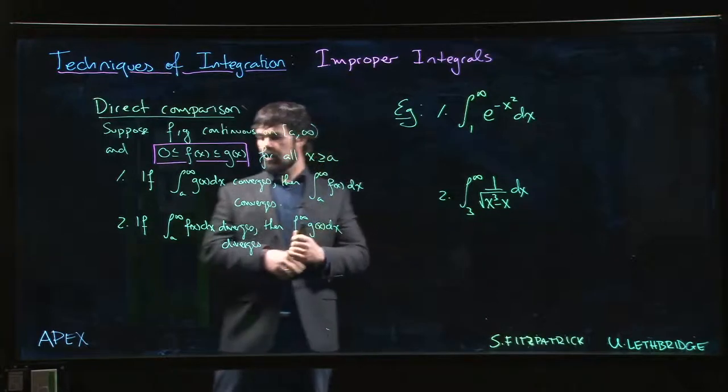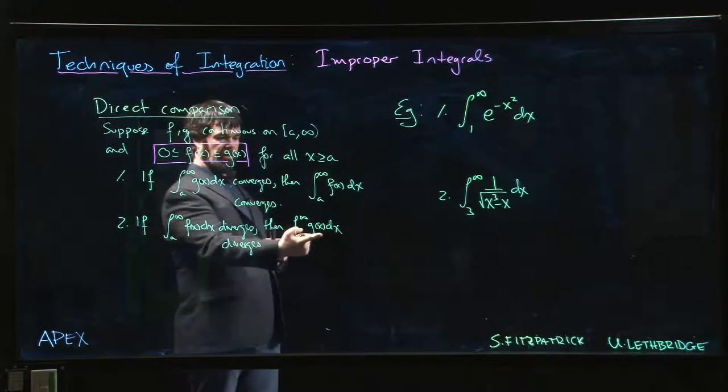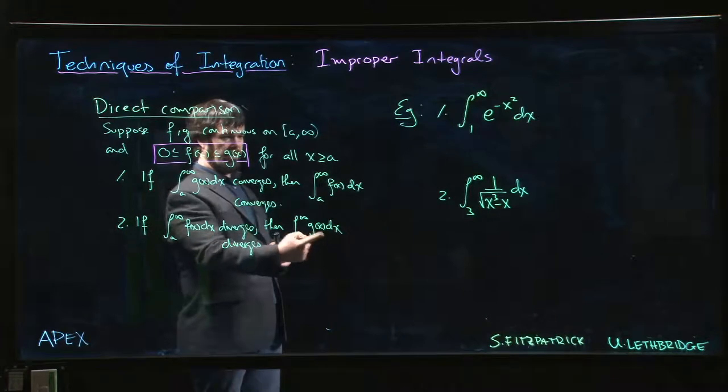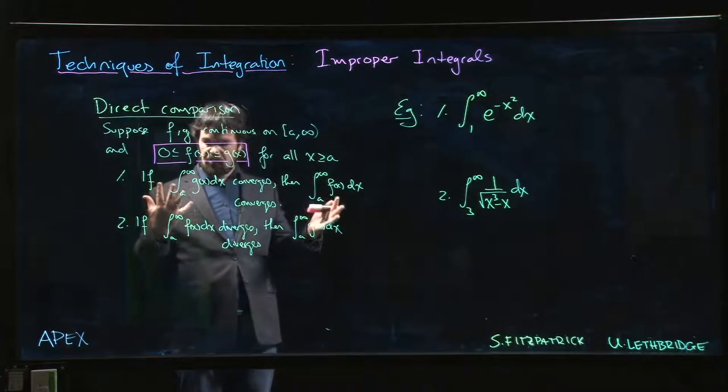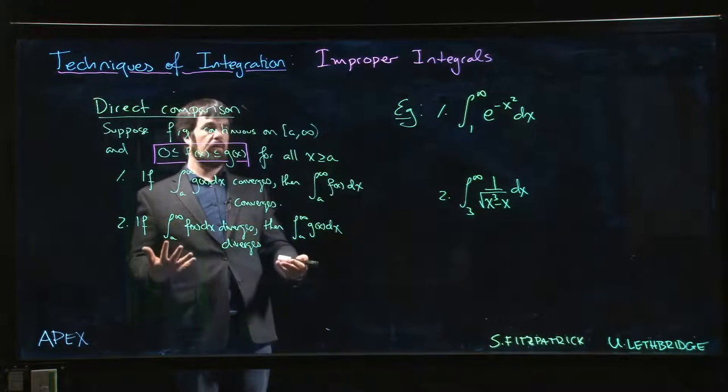On the other hand, if this integral is divergent, well, the integral for g(x) has to be even bigger than this one. If this one is already infinite, then that one has to be infinite too. So that's the essential idea, is to use known integrals to decide on convergence of unknown ones.